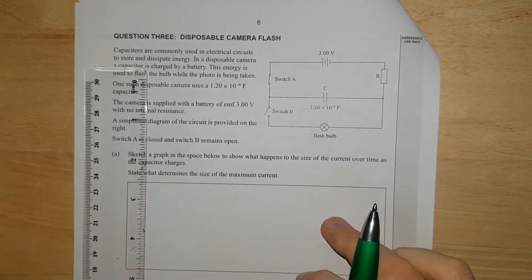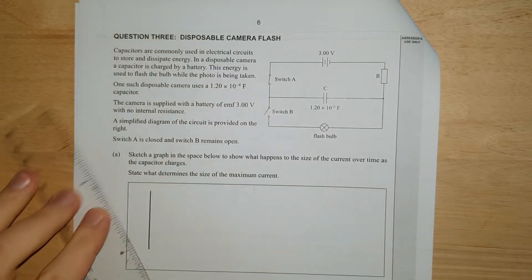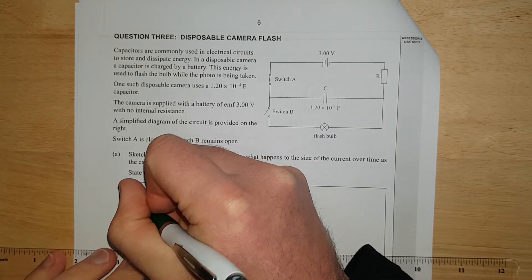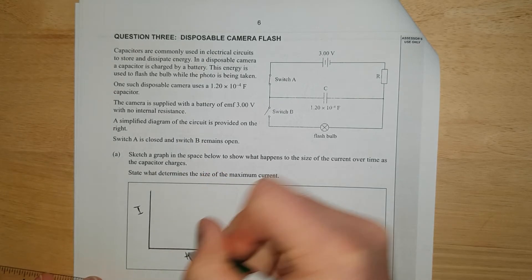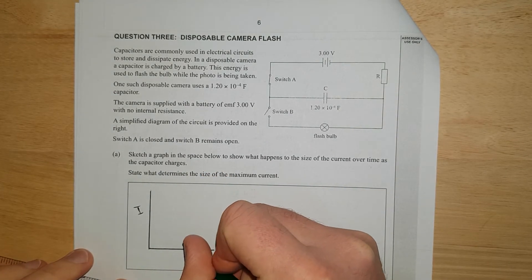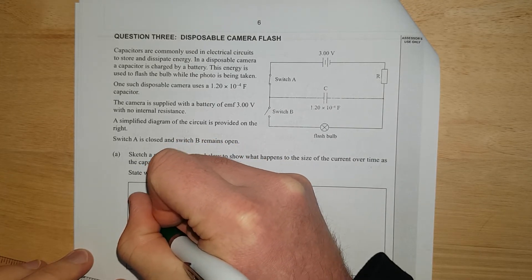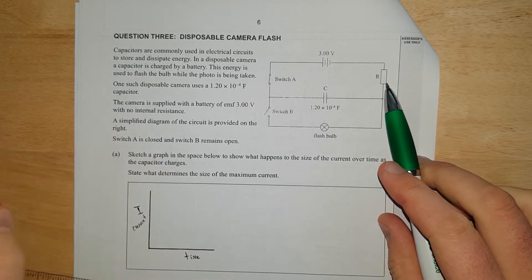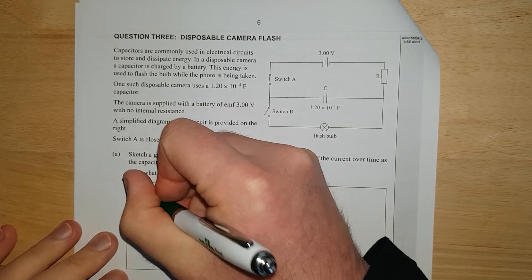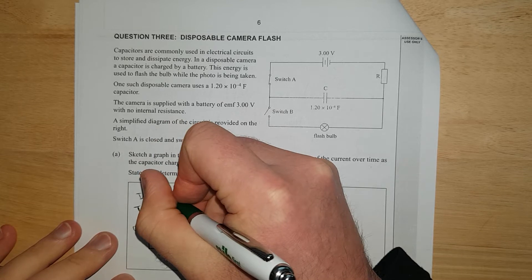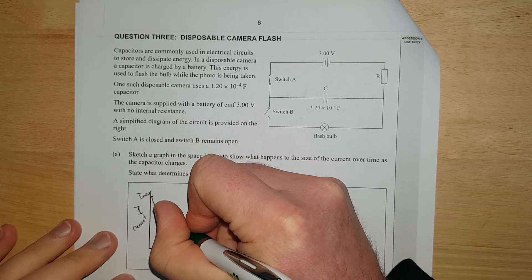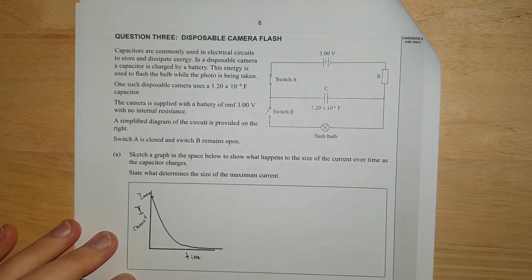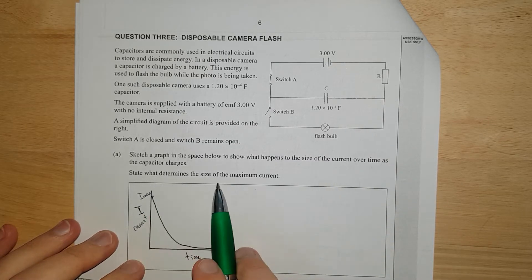It's going to just decrease as the capacitor charges up. I'll just move my calculator out of the way. Do a little graph. This is going to be current and this is going to be time. And it starts off at max current. What is the max current? Have we got R somewhere? No, we don't. So this is going to be Imax. And it's just going to knock off exponentially.